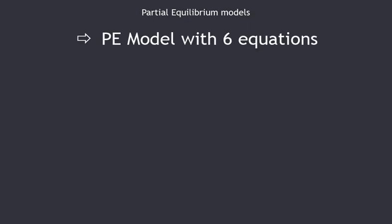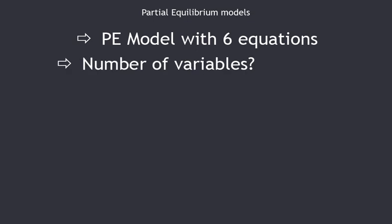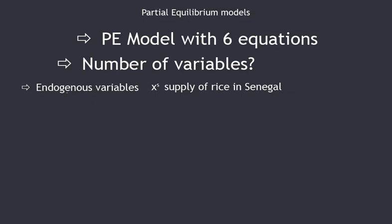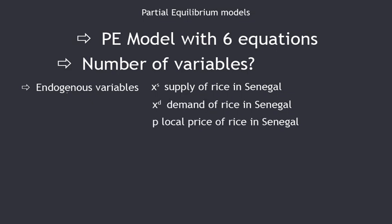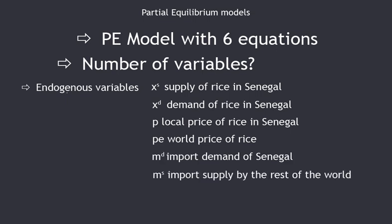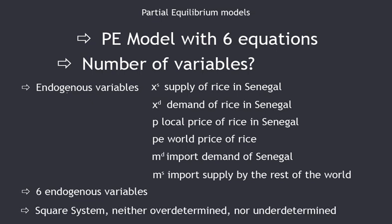We have a partial equilibrium model with six equations. We need to count the endogenous variables — those determined by the model. They are: XS (supply of rice in Senegal), XD (demand of rice in Senegal), P (local price), PE (world price), MD (import demand), and MS (import supply) — six endogenous variables in total. Since we have six equations and six endogenous variables, the system is neither over-determined nor under-determined; it is a square system, and we can find a feasible solution.